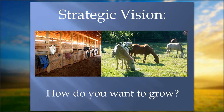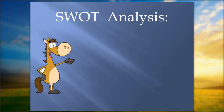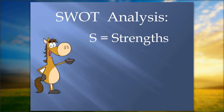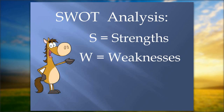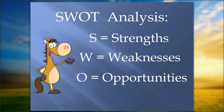My favorite part of the business plan is the strategic vision — it's really fun to plan how you want to grow. For instance, in 2012, Brookhill Farm decided we needed more stalls and had a major capital campaign. You may need more fencing, more land, or more animals. Now let's talk about the SWOT analysis. S stands for strengths, W for weaknesses, O for opportunities, and T for threats.